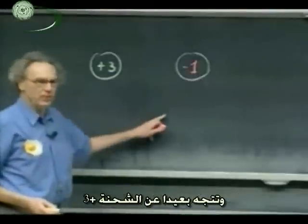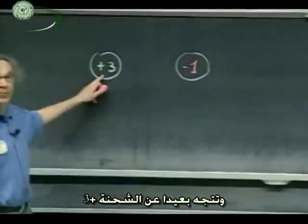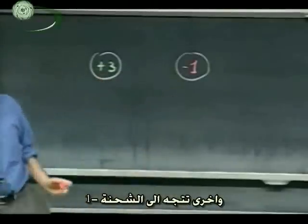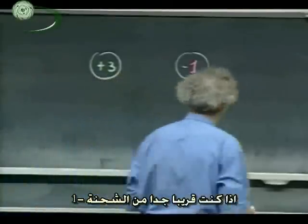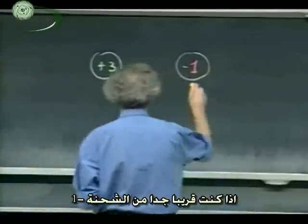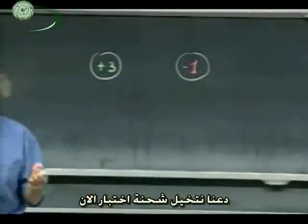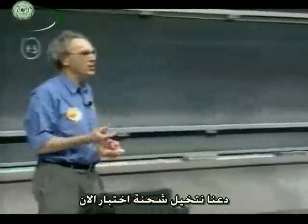So you can go to any particular point. You get an E vector which is going away from the plus three, you get one that goes to minus one, and you have to vectorially add the two. If you're very close to minus one, it's very clear because of the inverse R-squared relationship that the minus one is probably going to win.